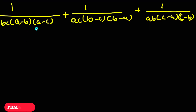Hello everyone, welcome to PB Maths. Today in the studio, I am going to solve a problem in algebra. The question is: 1 divided by bc times (a minus b) times (a minus c), plus 1 divided by ac times (b minus c) times (b minus a), plus 1 divided by ab times (c minus a) times (c minus b). If you are interested in solving this problem,